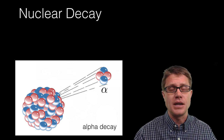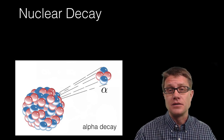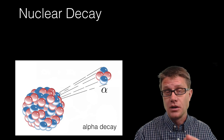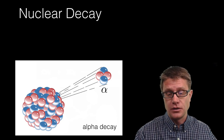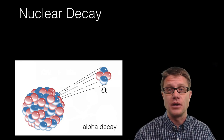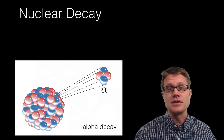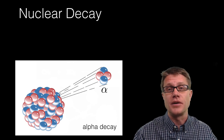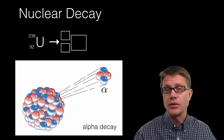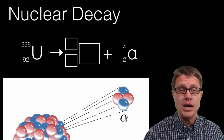Let's start with alpha decay. Alpha decay is the giving off of an alpha particle, which is two protons and two neutrons — no electrons — so it has a 2+ charge. It is essentially giving off a helium atom that does not have any electrons. If we write out this nuclear reaction: